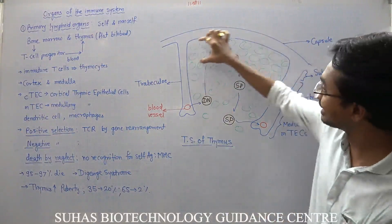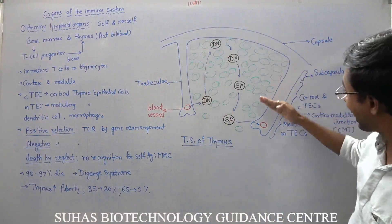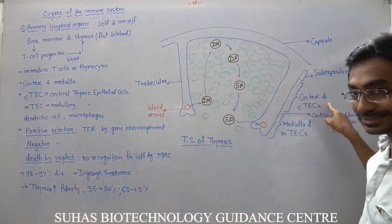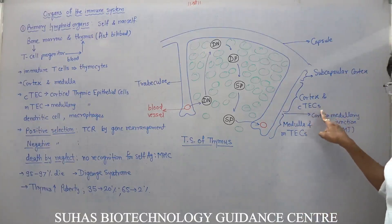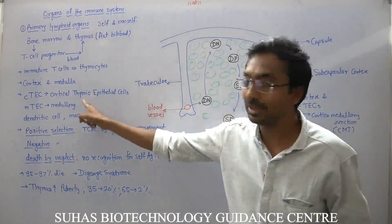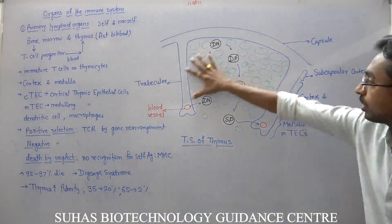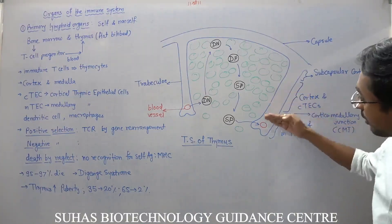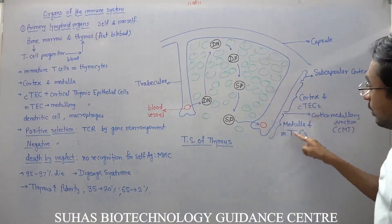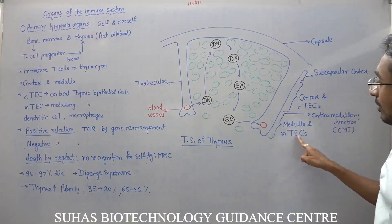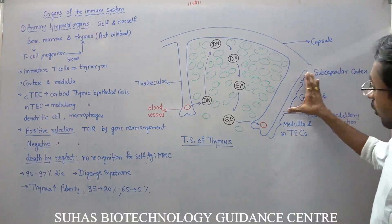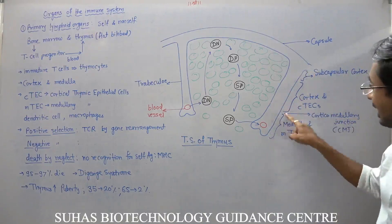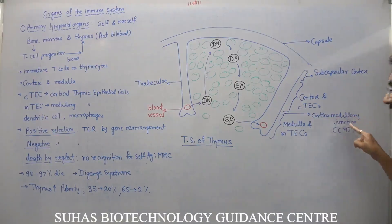This is the subcapsular cortex; after that starts the actual cortex, in which cortical thymic epithelial cells are present. Below that there is medulla, where medullary thymic epithelial cells are present.